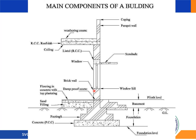The sill level is the base point of any window in a house. It is important to ensure evenness across all windows. The sill height ensures proper light entry, provides a comfortable view outside, and gives a solid base for window installation. The sill level of any house should be around three feet, that is 900 mm, measured from the floor level.